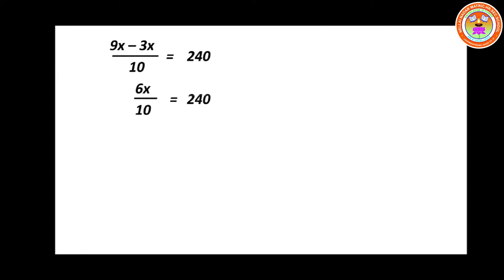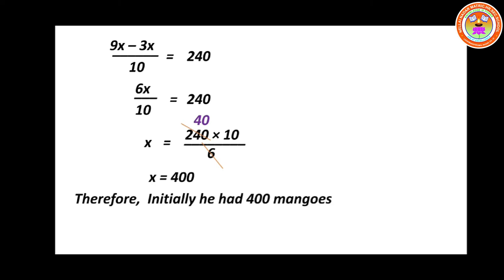Next step: 6x divided by 10 equals 240. The denominator 10 will go to the numerator part and the numerator 6 will come to the denominator part. So x equals 240 into 10 divided by 6. You can cancel 6 and 240 — 6 forties are 240 — giving 40. Now multiply: x equals 40 into 10, which is 400. Therefore initially he had 400 mangoes.